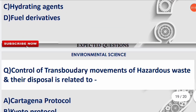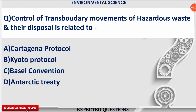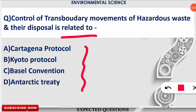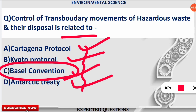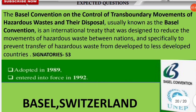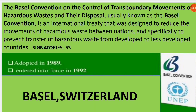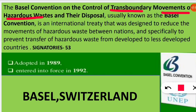The next question: 'The control of transboundary movements of hazardous waste and their disposal is related to which convention or protocol?' The correct option is option C: Basel Convention. For context, the Cartagena Protocol is related to biosafety, and the Kyoto Protocol of 1997 involves reduction of greenhouse gases. The full name of the Basel Convention is 'The Basel Convention on the Control of Transboundary Movements of Hazardous Wastes and Their Disposal.' It is an international treaty designed to reduce the movement of hazardous waste between nations, specifically preventing such waste from moving from developed to less developed countries.